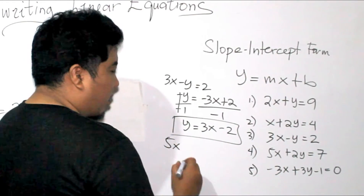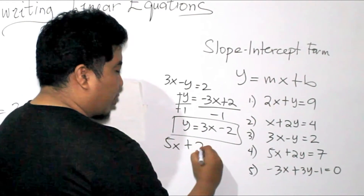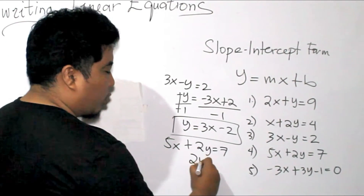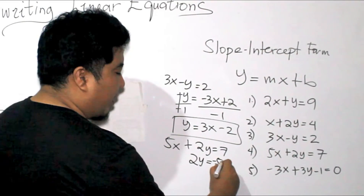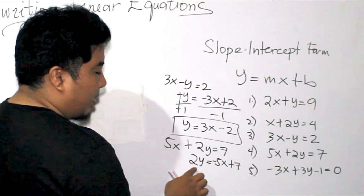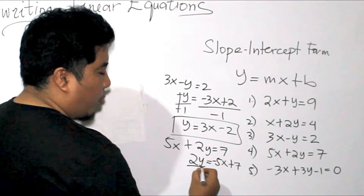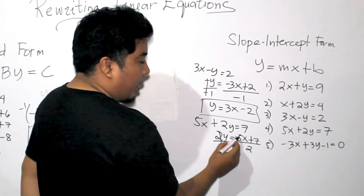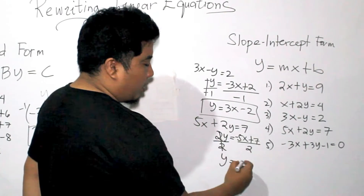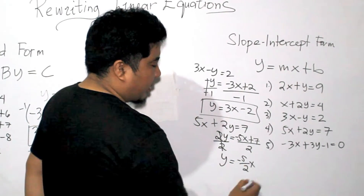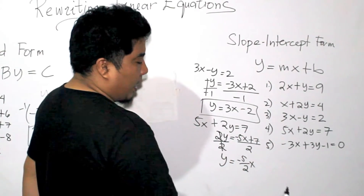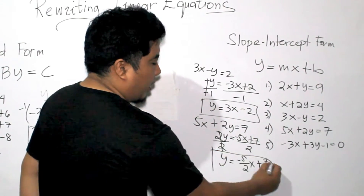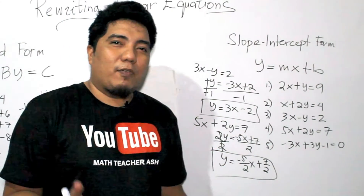For example number four, 5X plus 2Y is equal to 7. We transpose 5X, giving us 2Y is equal to negative 5X plus 7. Since we have a 2, we divide the whole equation by 2. Y is equal to negative five-halves X plus seven-halves. That is your final answer.